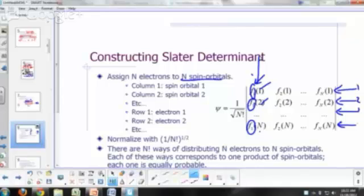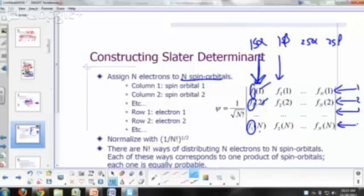And this is spin orbital one, spin orbital two, so this is like 1s alpha, 1s beta, 2s alpha, 2s beta, and so on. So column one would be spin orbital number one. Column two would be spin orbital number two. Row one, you'd have everything in row one would be functions of electron one. Everything in row two would be functions of electron two and so on.